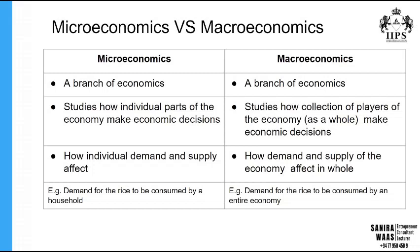Microeconomics identifies how individual demand and supply are affected, while macroeconomics identifies how the demand and supply of the entire economy are affected. For example, a microeconomics case would be the demand for rice to be consumed by your household, whereas a macroeconomics example would be the demand for rice to be consumed by an entire economy.